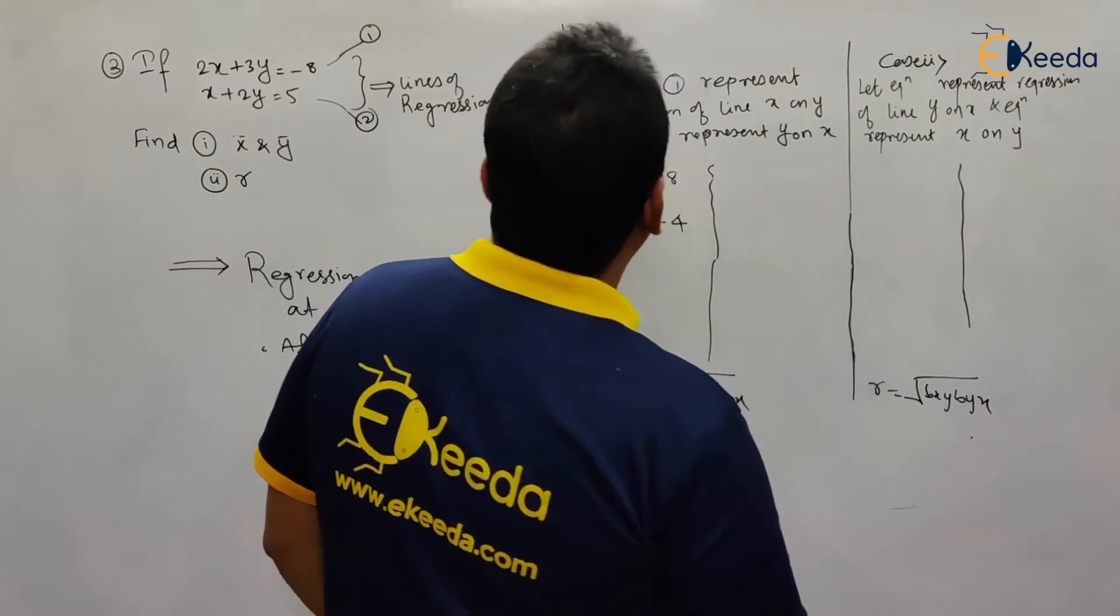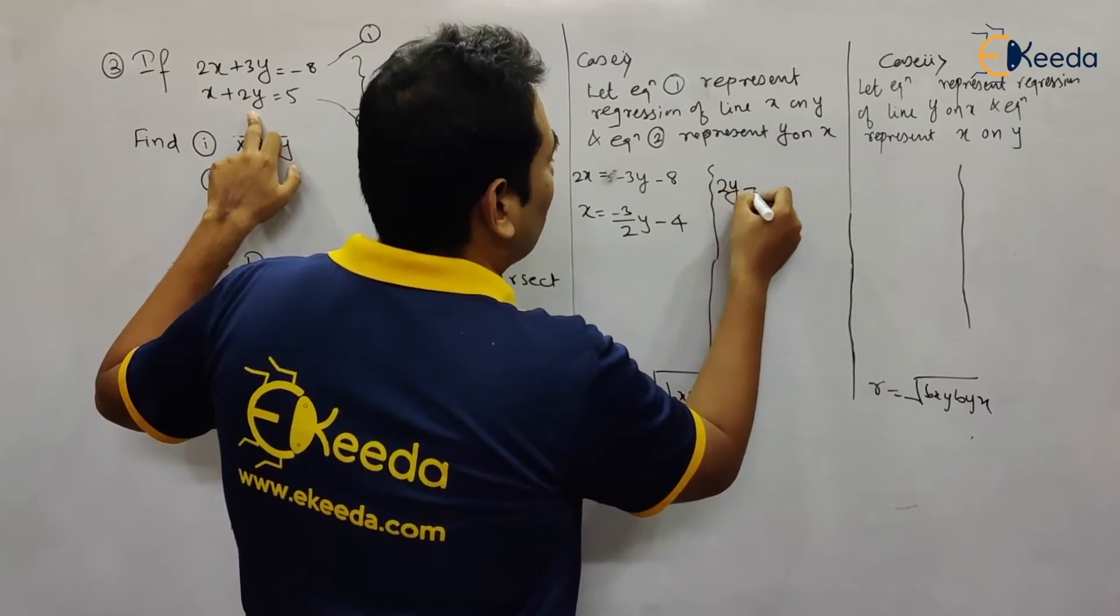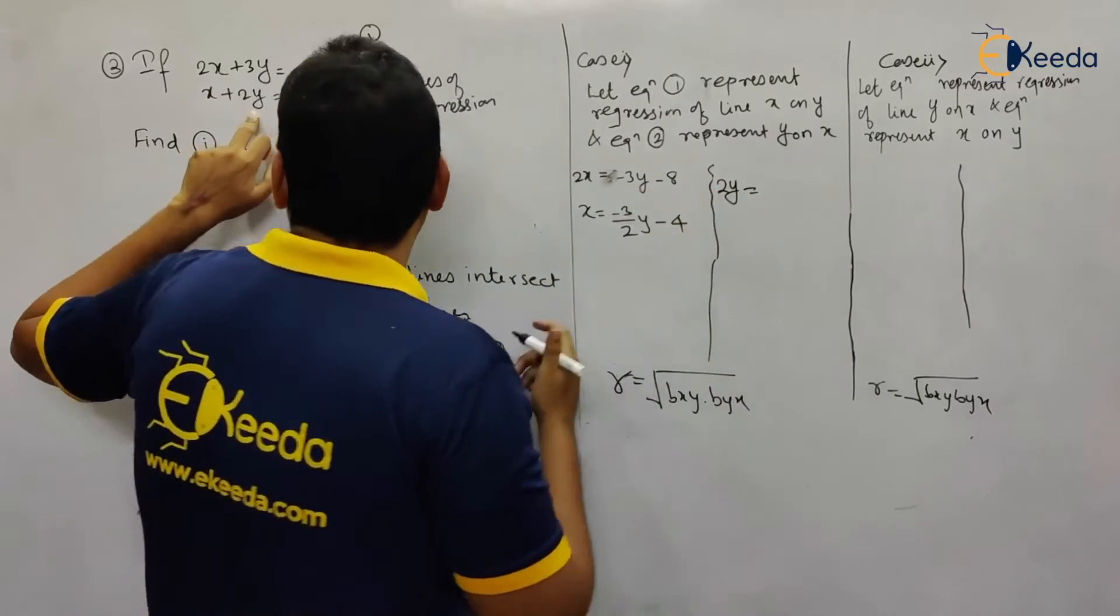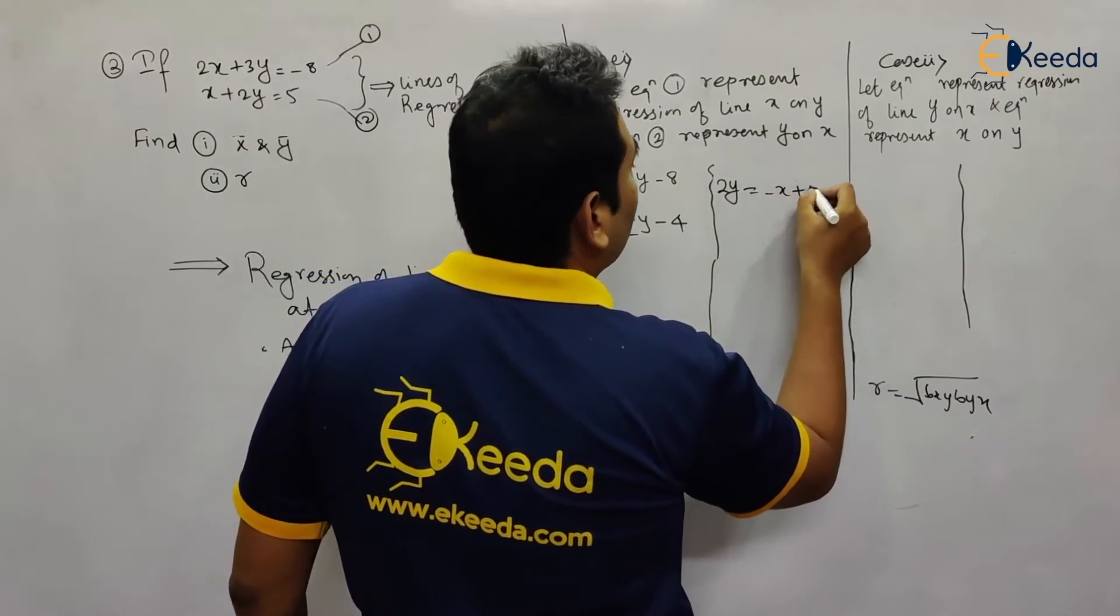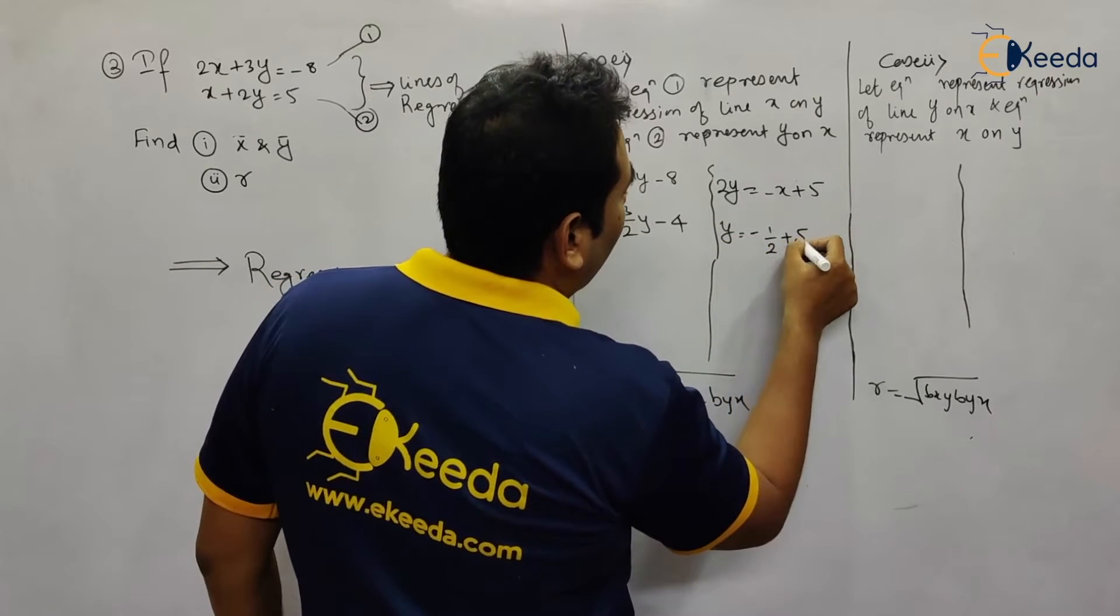Here equation 2 represents y on x. So y will be on this side, the rest on that side. That becomes y = -1/2 x + 5/2.